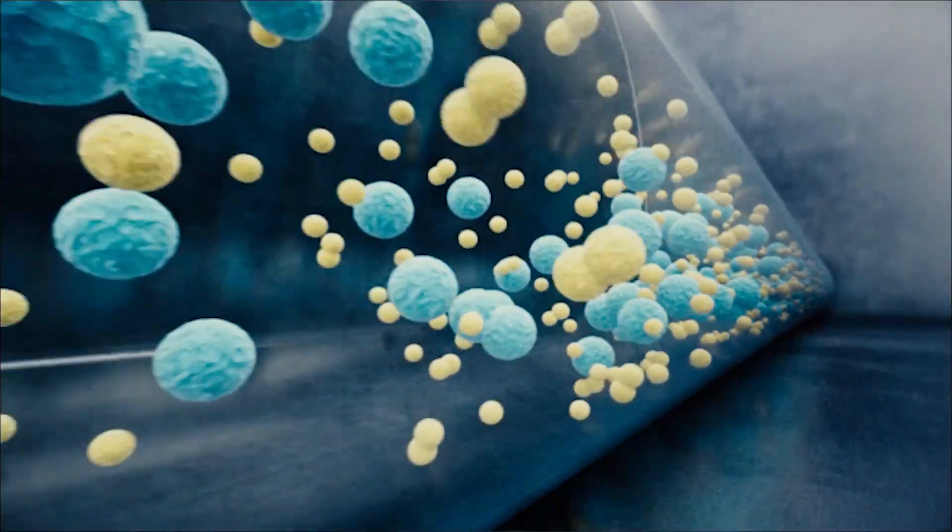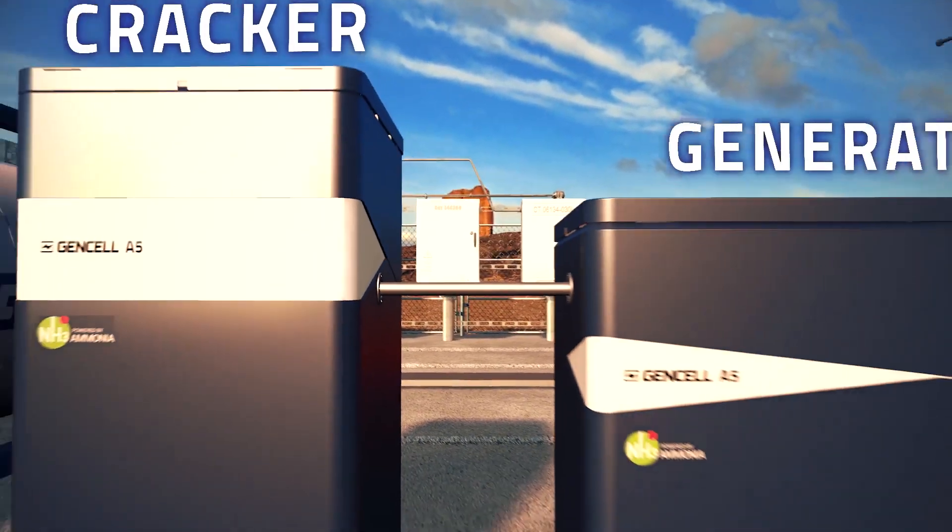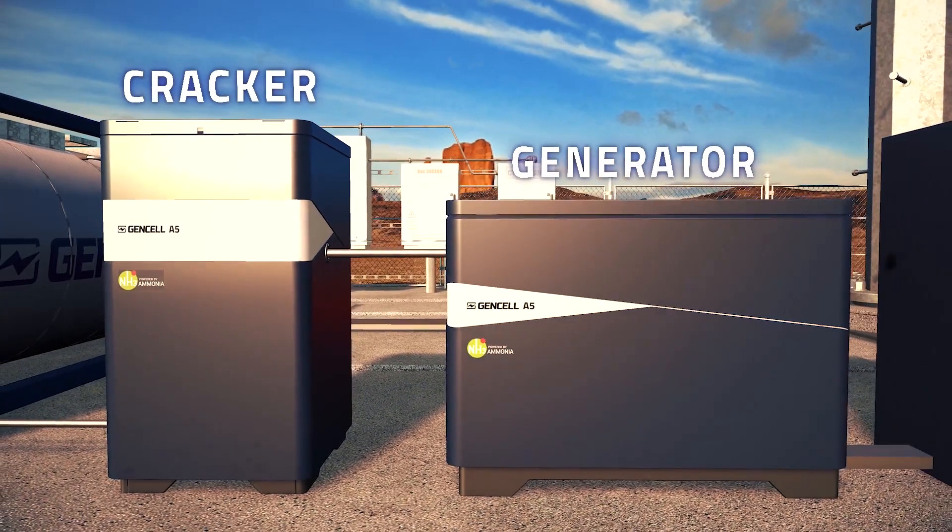The mix of 75% hydrogen and 25% nitrogen flows into the fuel cell generator.